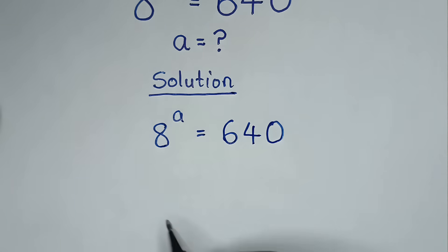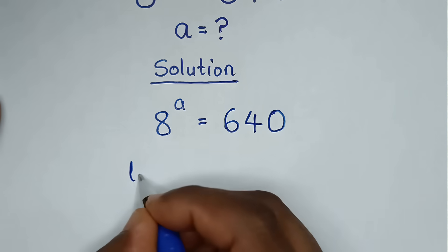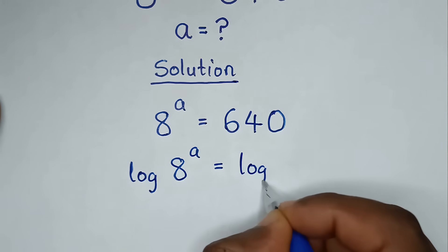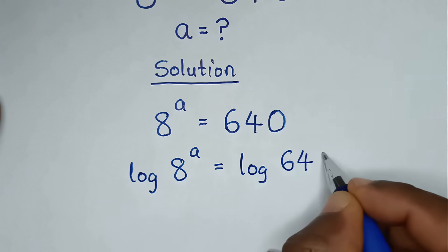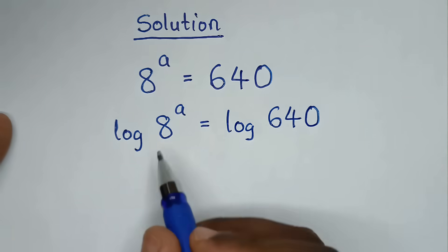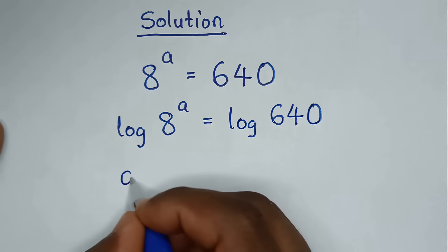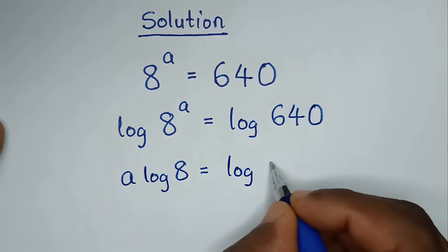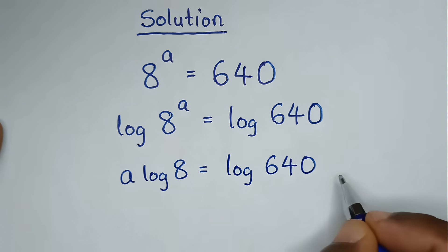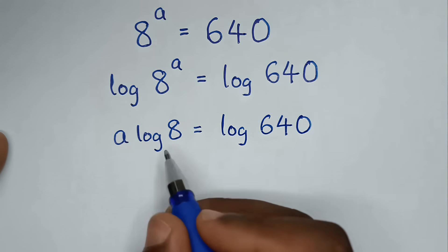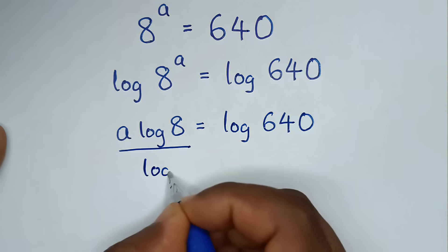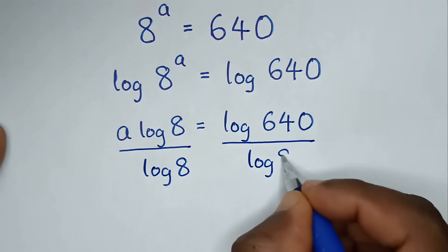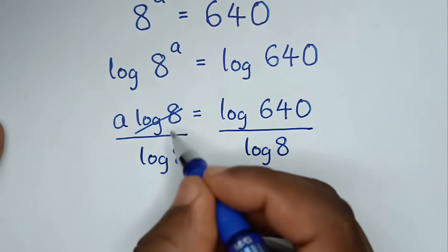In the first step we will apply log in both sides. So it will be log of 8 power of A is equal to log of 640. Then this power of A will move to the base, so it will be A log of 8 is equal to log of 640. Then we will divide by log of 8 in both sides, and this log of 8 will cancel this log of 8.